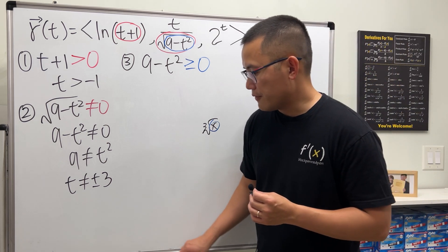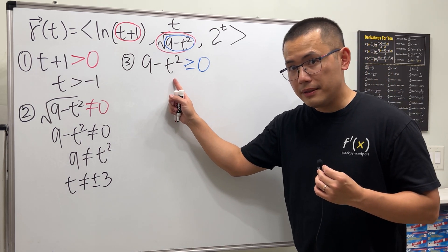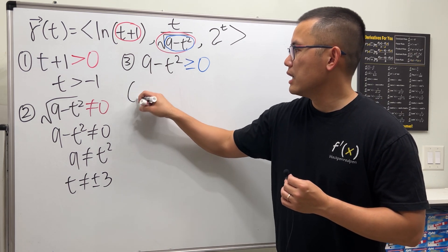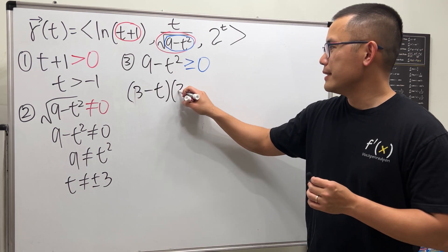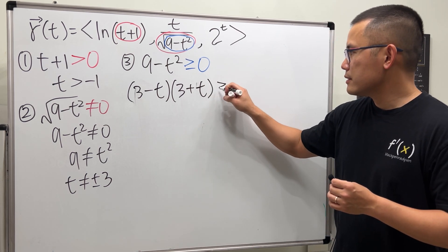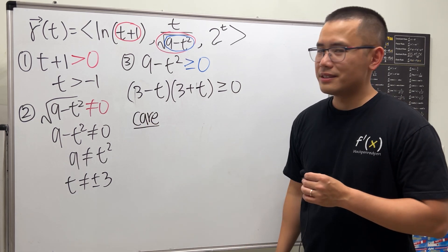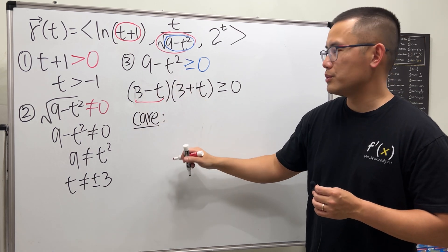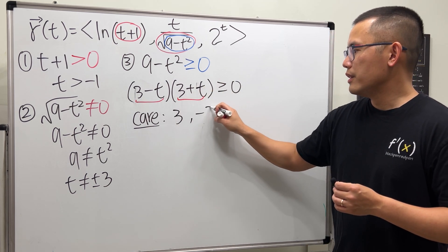Now to solve this inequality, notice this is a quadratic inequality. I recommend factoring it. We get three minus t times three plus t, all greater than or equal to zero. From here, let's find the numbers we care about. To make the first factor equal to zero, t has to be three. To make the second factor equal to zero, t has to be negative three.